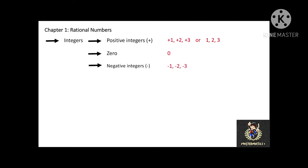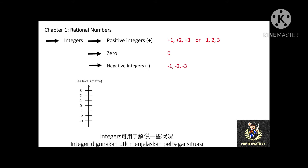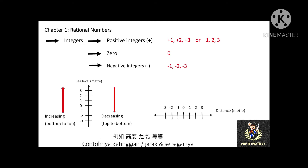Why are integers important? Because we are using them in our daily situations. For example, increasing or decreasing of sea level, and moving toward left or toward right. Let me give you another example: a helicopter is flying at positive 100 meters above the sea level.